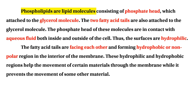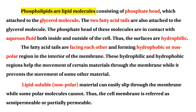The fatty acids face each other, forming a hydrophobic or nonpolar region in the interior of the membrane. These hydrophilic and hydrophobic regions affect the movement of certain materials through the membrane. The phospholipid bilayer can prevent movement of certain materials. Lipid-soluble, nonpolar material can easily slip through the membrane, while polar molecules cannot. This is why the membrane is referred to as the semi-permeable or partially-permeable membrane.